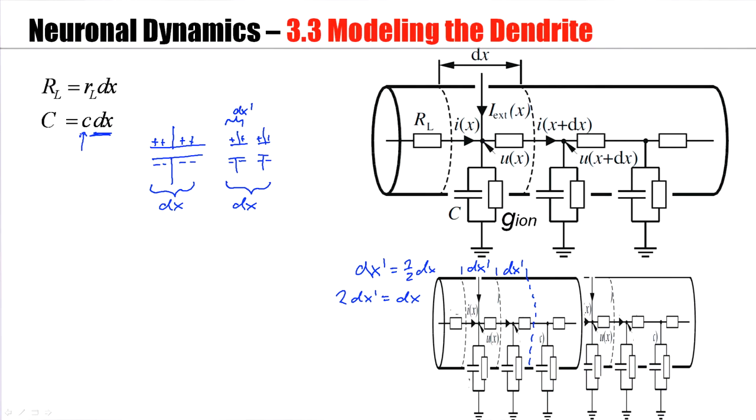Now a similar argument can be made for the longitudinal resistor. So here's my longitudinal resistor in a segment of size dx. Now within the same segment dx, I now have two of these smaller resistors. So instead of one big resistor, I now have two smaller ones. Two resistors in series. The bigger I choose my segment, the bigger the resistor. And this is expressed by this formula here. IL is the specific resistance per unit length of the dendritic cable.